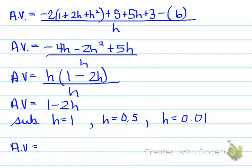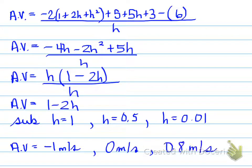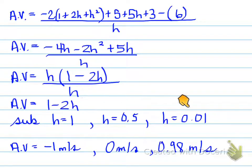Substituting the respective h values, we find the average velocities are: −1 meter per second, 0 meters per second, and 0.98 meters per second for each of the three intervals.